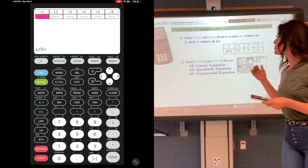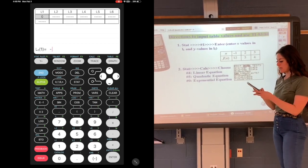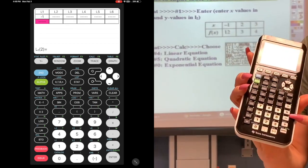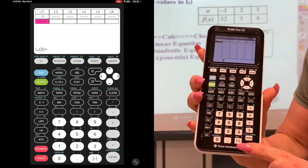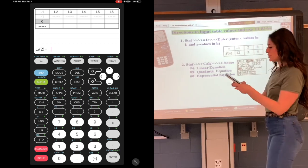So I'm just going to enter in my x values. The first x value that I have is negative one. So press negative one. And biggest mistake that I've seen is students saying minus one instead of negative. The negative button is in the bottom corner. So negative one, enter. Two, enter.